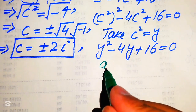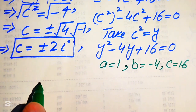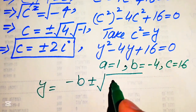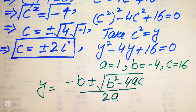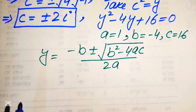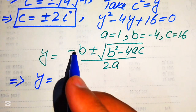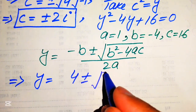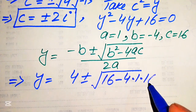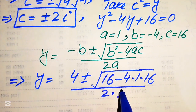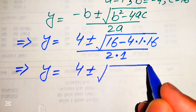The coefficients are a = 1, b = -4, and c = 16. The quadratic formula gives y = (-b ± √(b² - 4ac)) / (2a). Substituting the values: y = (4 ± √(16 - 4·1·16)) / (2·1).